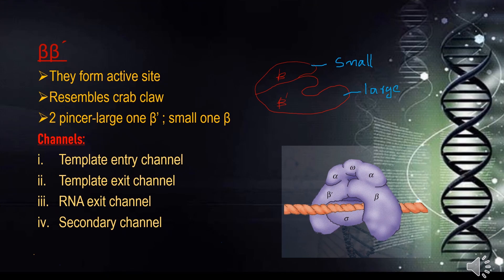The next component is beta/beta-dash, which forms the active site of RNA polymerase. It resembles a crab-claw-like structure with two pincers: the large pincer is beta-dash and the small one is beta. There are several channels in this beta/beta-dash structure: the template entry channel where DNA enters, the template exit channel, the RNA exit channel, and the secondary channel through which ribonucleotides enter into the active site. The beta/beta-dash structure also contains a catalytic motif, bridge helix, and trigger loop, required for transcription.